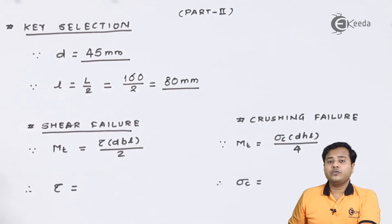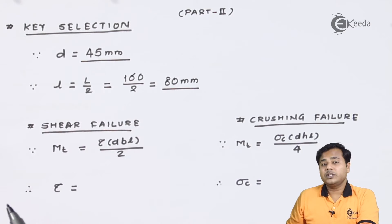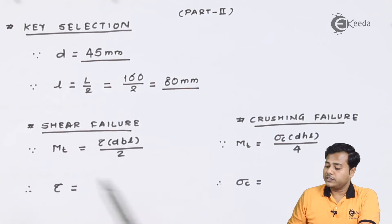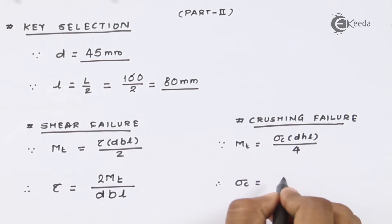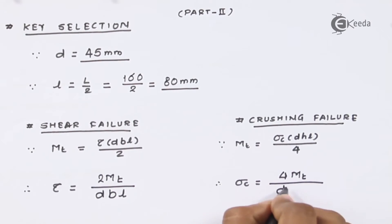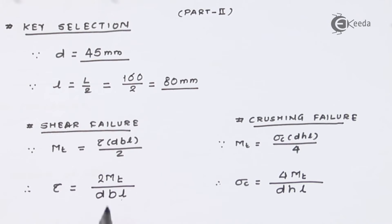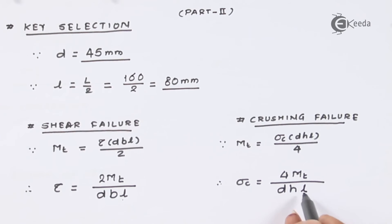These are the two important parameters for the key. The key is going to fail under two criteria: first is shear failure and second is the crushing failure or compressive failure. We have already gone through this key selection design procedure. The standard formula for shear failure is Mt = τ(dbl)/2 and the value of compressive stress is given by Mt = σc(dhl)/4 where l is the length, d is the shaft diameter, b is the breadth, and h is the height of the keyway.